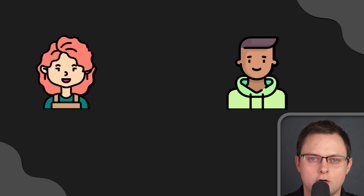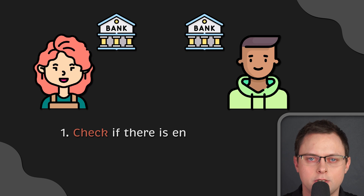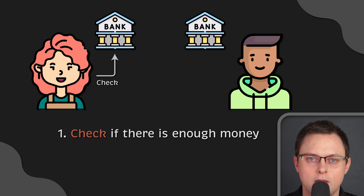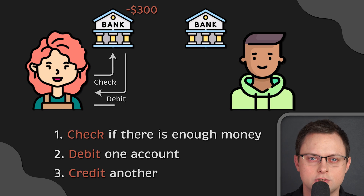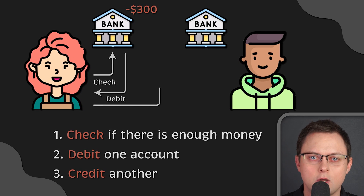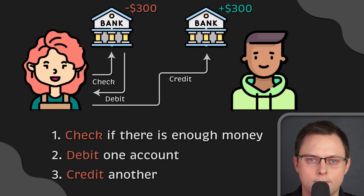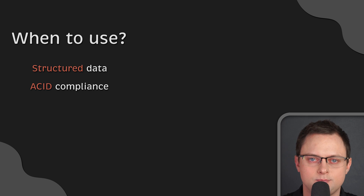For example, consider a transfer of funds from one bank account to another. First, you need to check if there is enough money to transfer. Then you would debit one account and credit another. So if at least one step fails, you would want to roll back the entire transaction. You would use a relational database for structured data and ACID compliance.